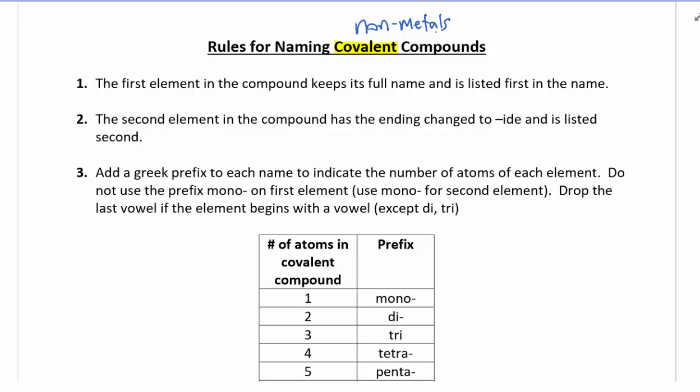And then the third rule, which is unique to covalent compounds, is that you're going to add the Greek prefix to each name to indicate the number of atoms in that compound. So this is looking at the subscript in the actual compound formula itself.